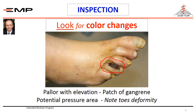This area is a potential pressure area because of the flexion deformity of the toes. This flexion deformity is classical in diabetic patients. There are other deformities characteristic for a diabetic patient — look for them, look for their names, and try to explain the deformity present in this picture. Discuss this with your tutor in your clinical ward session.